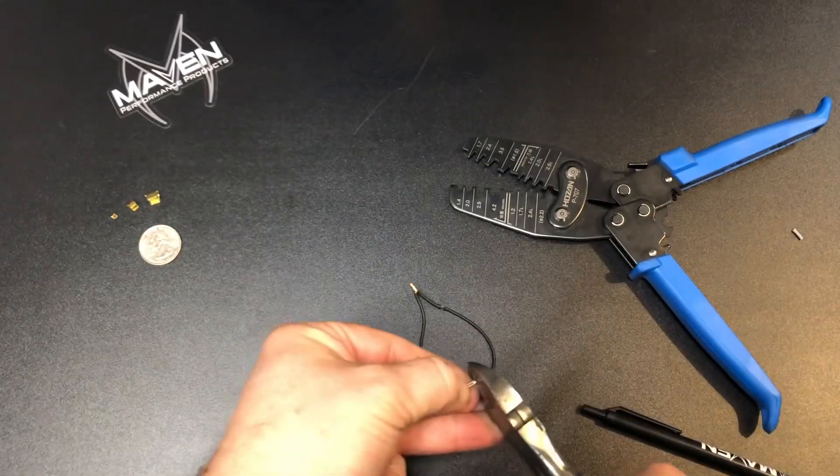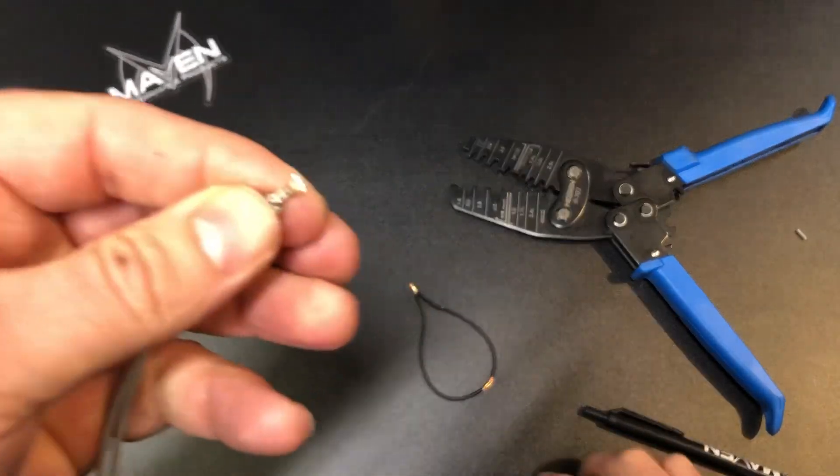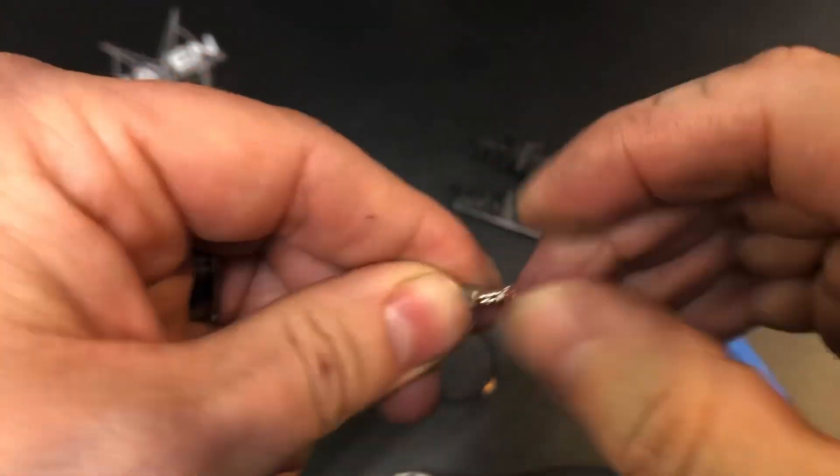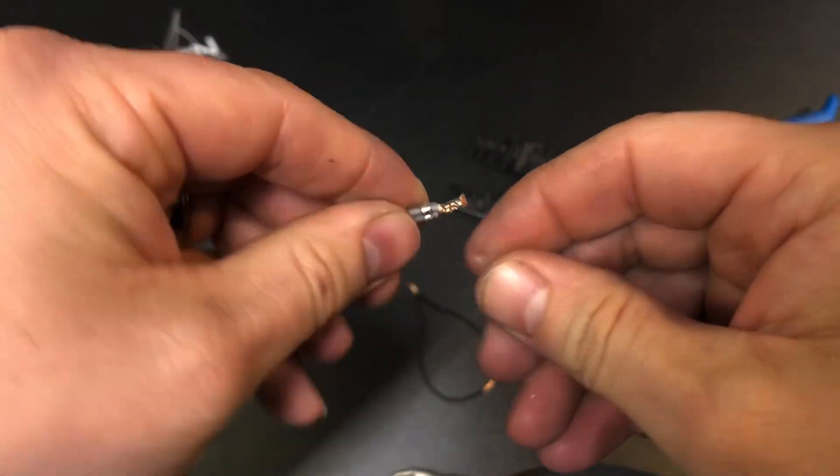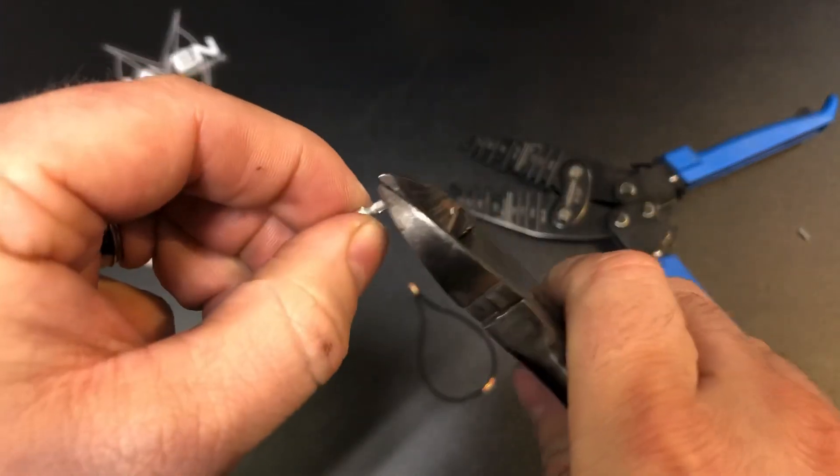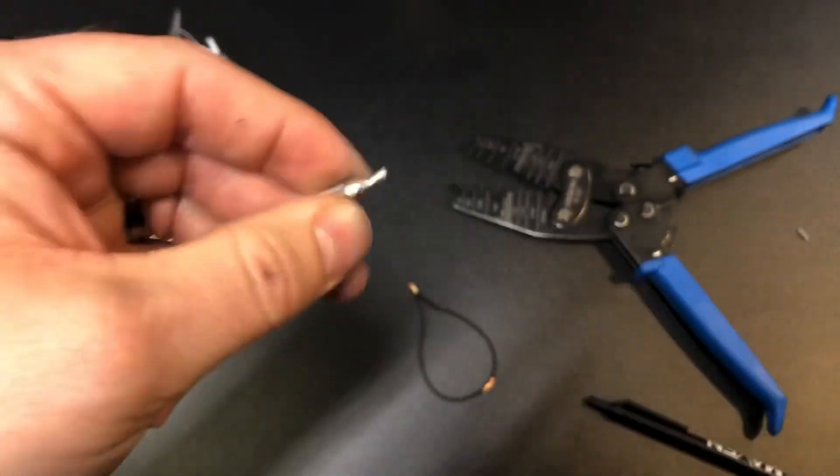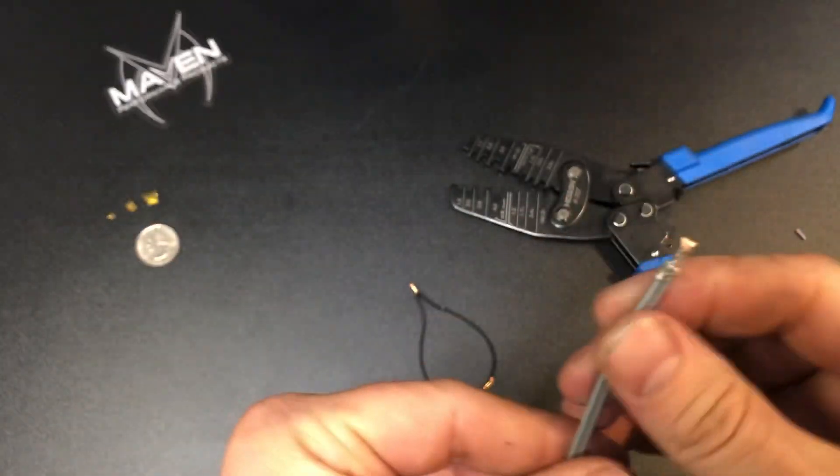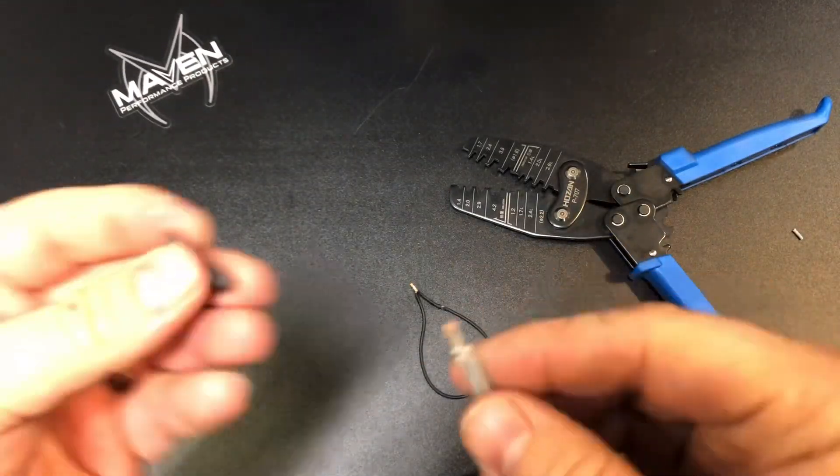You might want to come in here and kind of straighten this out a little bit, kind of get rid of some of the sharp edges. But it actually works really well. Then you can bring your piece of heat shrink in, make sure it's plenty long because we want to make sure this is all sealed off. Drop it over that.